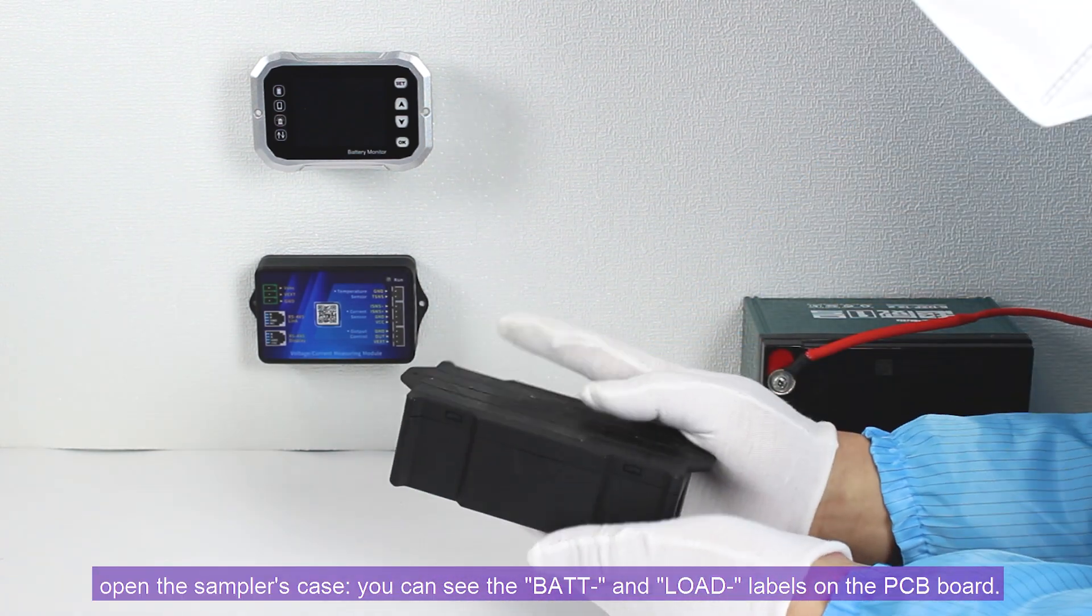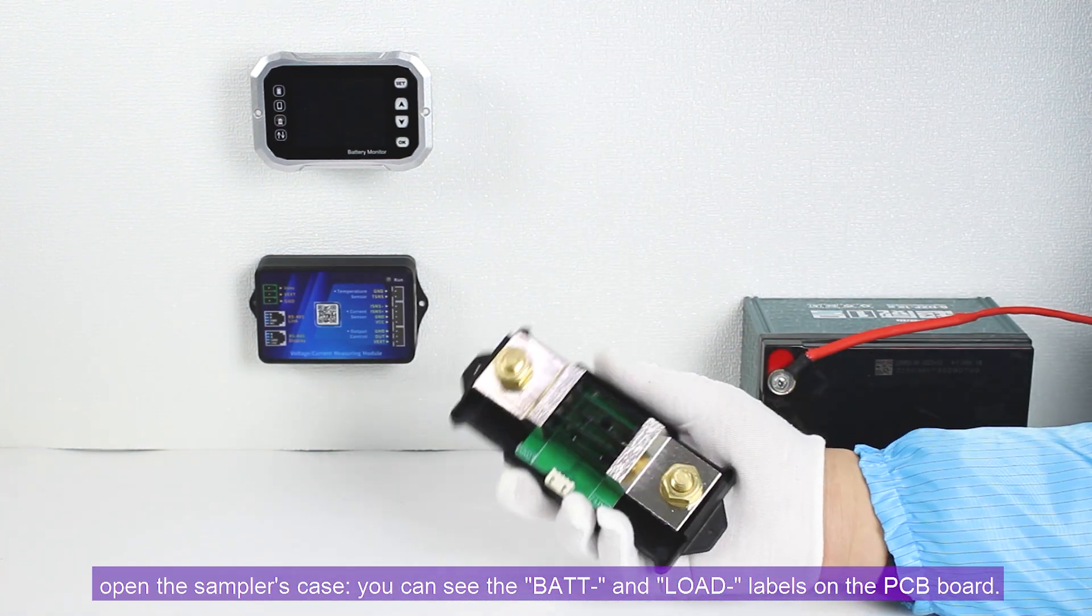Next, open the sampler's case. You can see the bat and load labels on the PCB board.